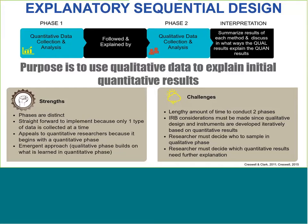The strengths of the explanatory sequential design are that the phases are distinct and straightforward because one type follows the other. It appeals to quantitative researchers because it begins with the quantitative phase, and it's an emergent approach. The challenges are that it's lengthy because research is conducted in two phases. IRB considerations may be needed since the interview guide may change based on quantitative findings, potentially requiring an amendment. The researcher also has to decide who to sample in the qualitative phase and which quantitative results need further explanation.